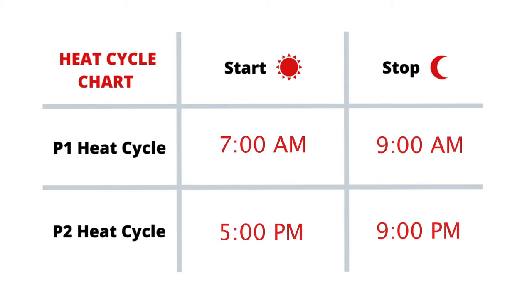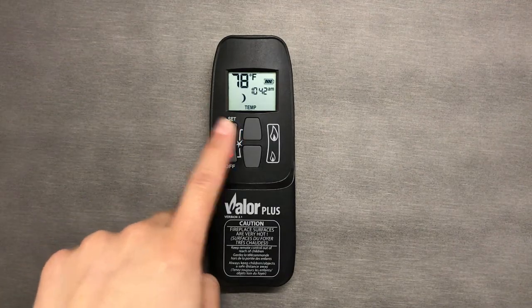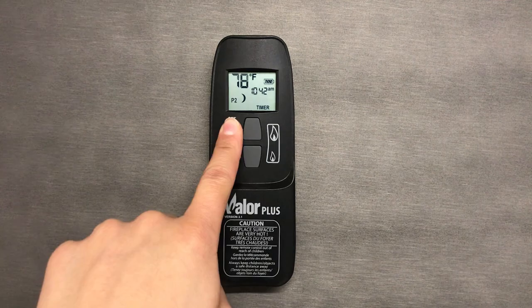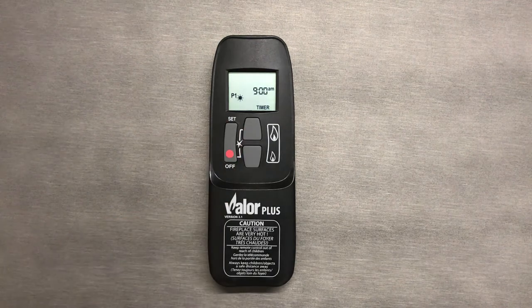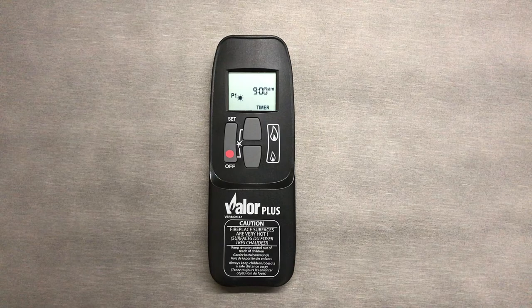As you can see, the first heat cycle begins at 7 a.m. and ends at 9 a.m. To set these time events, use the set button to navigate to timer mode. Press and hold the set button until the time begins to flash. You should also see the Sun icon with P1 next to it, which signifies the start of my first heat cycle.